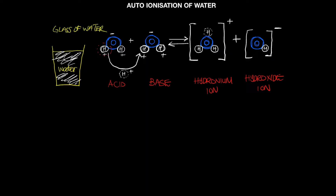When water molecules ionize themselves, they form an ionic product: one molecule will donate a proton and one molecule will accept a proton. Looking at this schematic diagram, one water molecule reacts with another. The first molecule behaves as an acid — it is a proton donor. You can see there is a proton that is donated to a second water molecule.